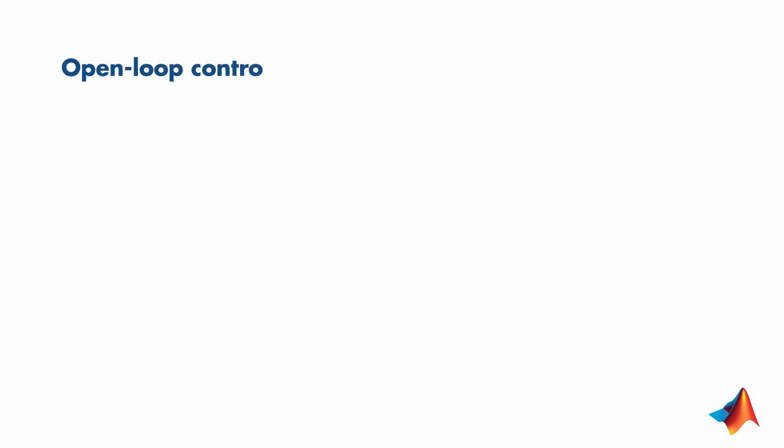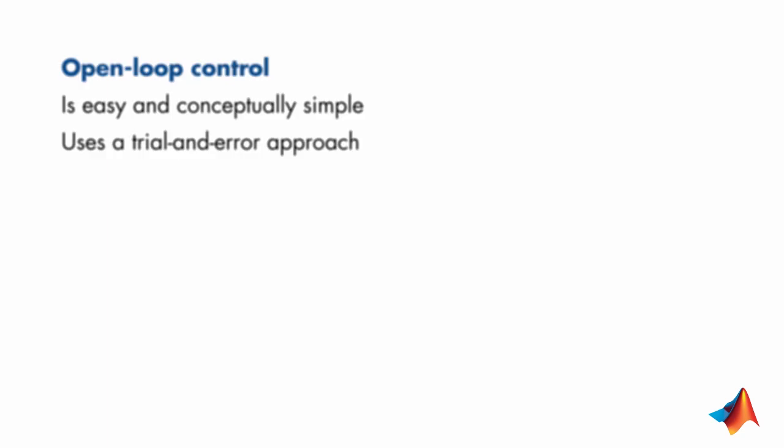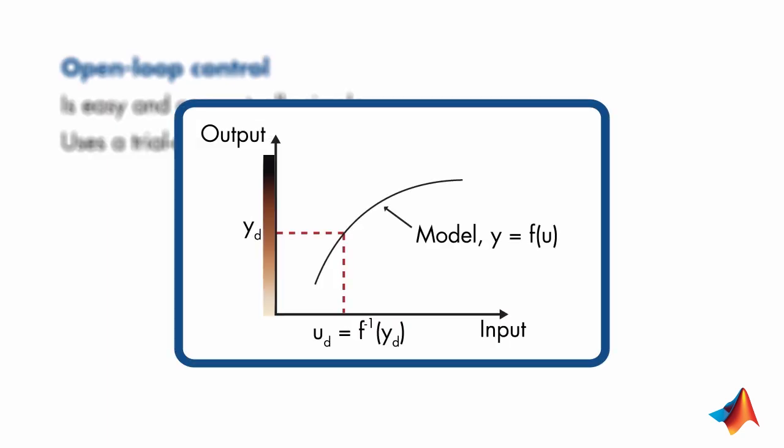Let's summarize what we've seen in this video. Open loop control is easy and conceptually simple. Through experiments, you find the model of your system. If there are no variations or unexpected events, you know what input to give to the system to get a desired output.